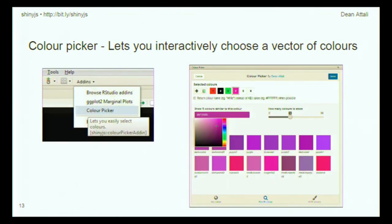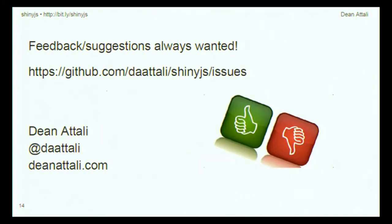I also built a color picker add-in, accessible from the add-in menu of RStudio. This lets you interactively choose colors. For example, if you have a plot with five colors and don't want to keep changing parameters to see what they look like, you can select them here, and when you click, it gives you back a vector with the actual color strings you've chosen.